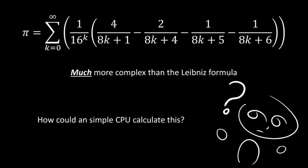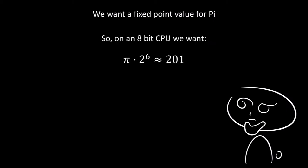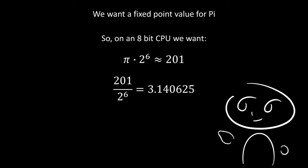So how would a simple CPU calculate this? What we want is a fixed point value for pi. So on an 8-bit CPU, we want pi multiplied by 2 to the power of 6. This roughly equals 201. And if you take 201 and divide it by 2 to the power of 6, you get 3.140625, which is pretty close to pi, as opposed to pi equals 3, which is what you would get if you just represented it as an integer.